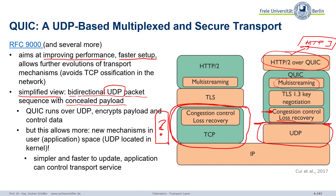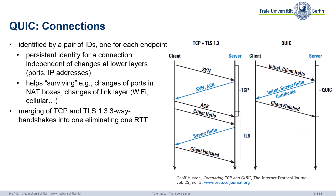In QUIC we have different terms. Connections are identified by a pair of identifiers, one for each endpoint. The endpoint can pick an identifier and declare it as its identifier for that side. This is the persistent identity for the connection, and it is independent of whatever happens at the lower layers. So if you change ports or IP addresses, the connection survives — even if you change from Wi-Fi to cellular.